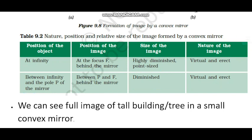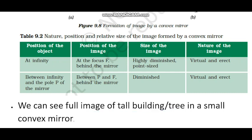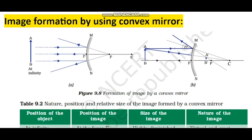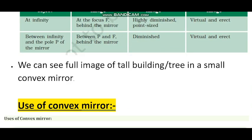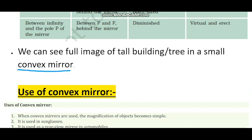We can see the full image of a tall building or tree in a small convex mirror. If you want to obtain a small image of a large object, you use the convex mirror. The full image of a tall building or tree can be obtained with the help of a convex mirror. Now we will discuss the uses of the convex mirror.